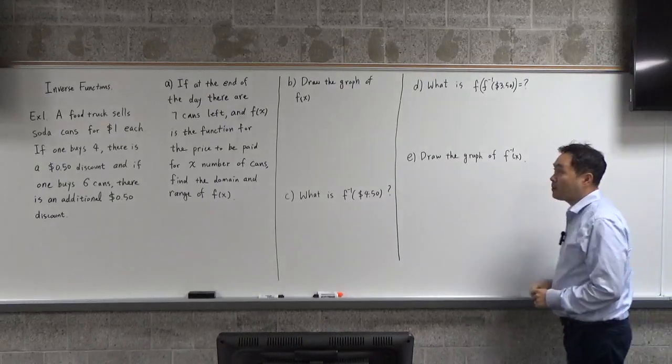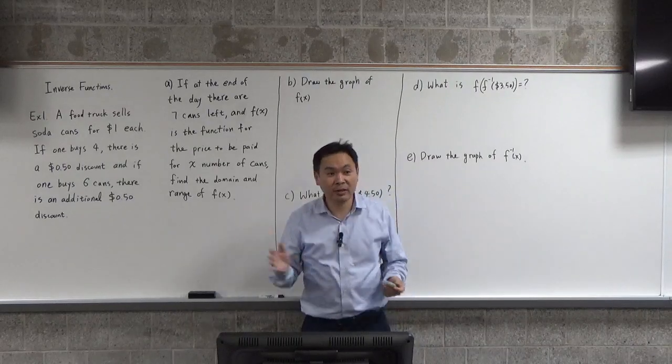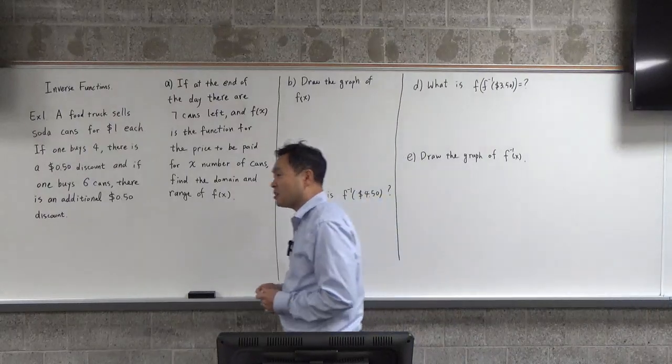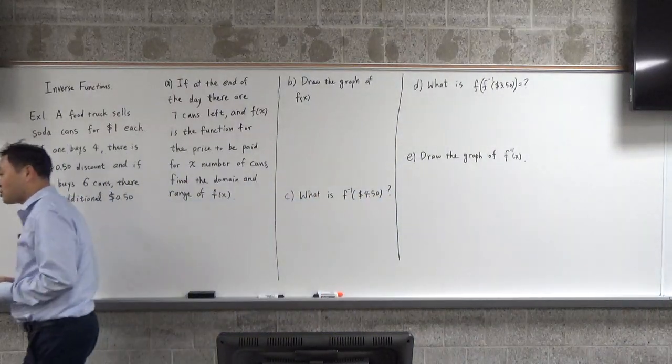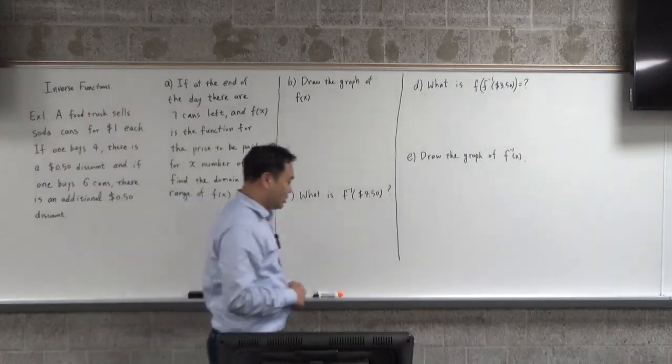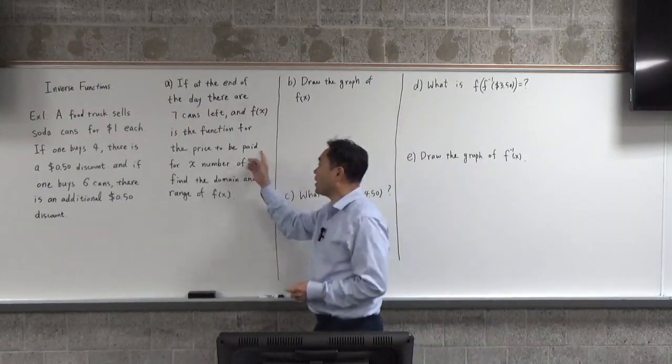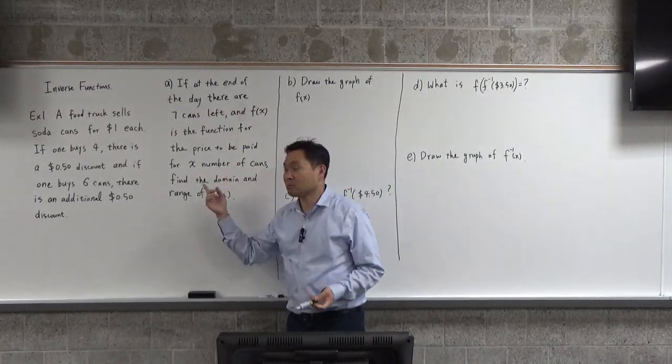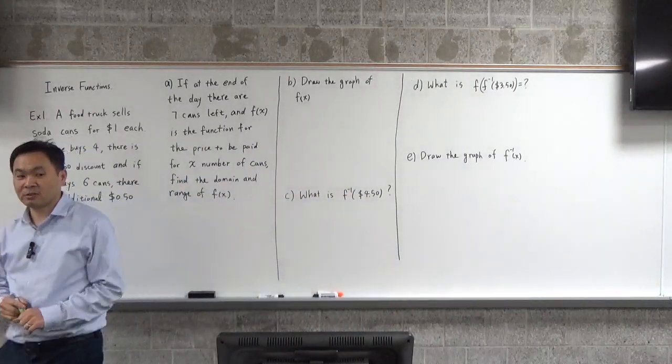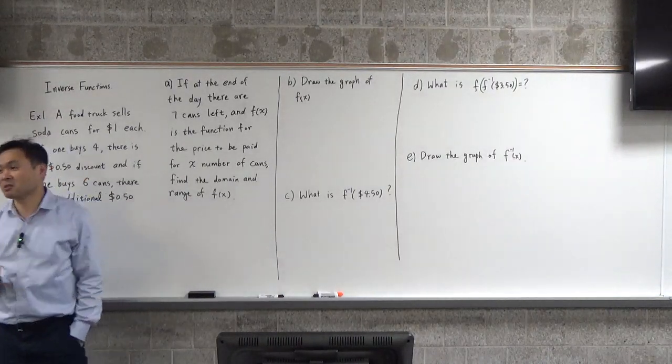At the end of the day, there are seven cans left and the food truck is about to close, waiting for somebody to come buy some soda cans. f(x) would be the price paid if somebody buys x number of cans. So what would be the domain and range of the function f(x)?